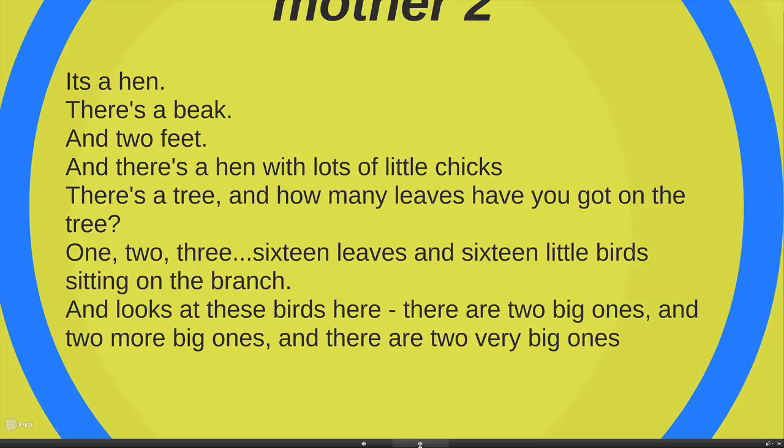And then she goes, there's a tree. And how many leaves have you got on the tree? Notice the tree's the whole. The leaves are the parts. She's broken it down. And then she gives the formal counting system. One, two, three, four, five, six, seven, eight, nine, ten, all the way up to 16 leaves. And she compares the 16 leaves to 16 little birds.